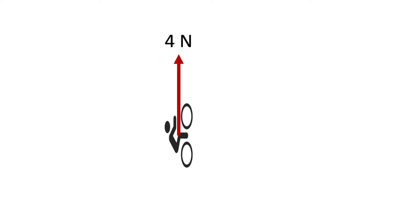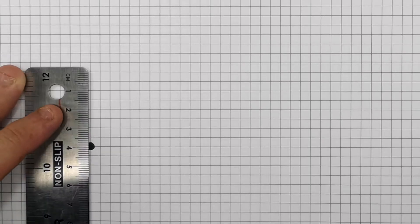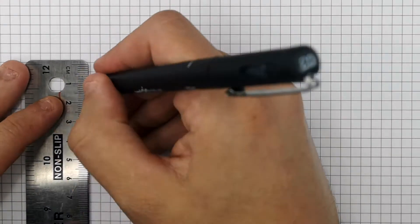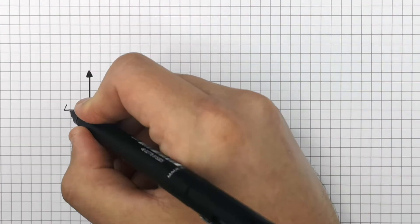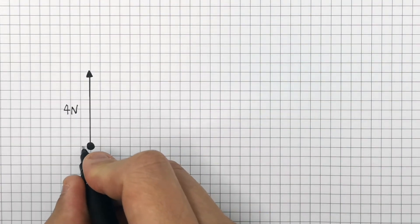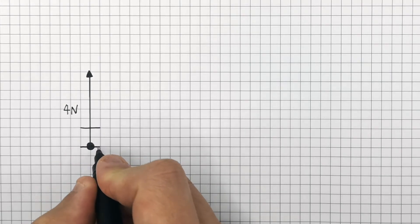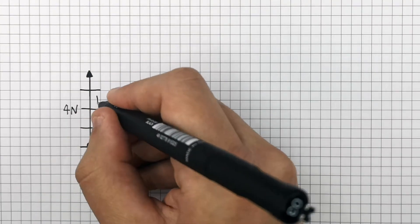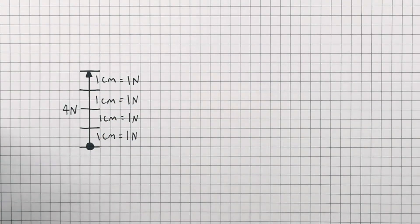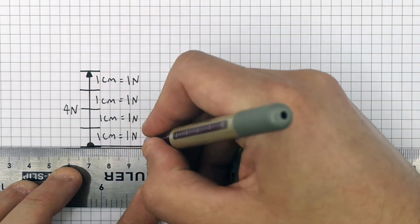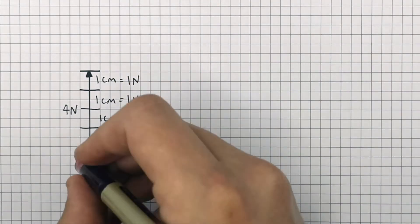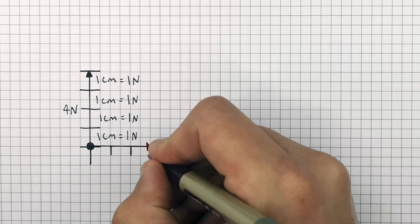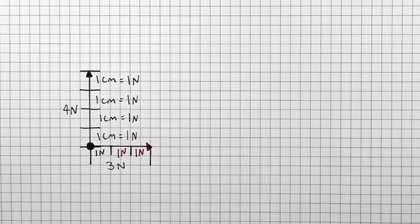This cyclist has a driving force of four Newtons, and the wind produces a force of three Newtons directly east of the cyclist. We're drawing an arrow representing the four Newton driving force — it is four centimeters long because the scale we're using is one centimeter equals one Newton. Our scale drawing will also require a three centimeter line to represent the three Newton force from the wind.